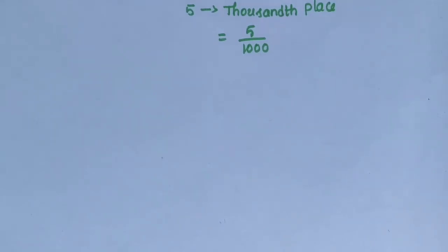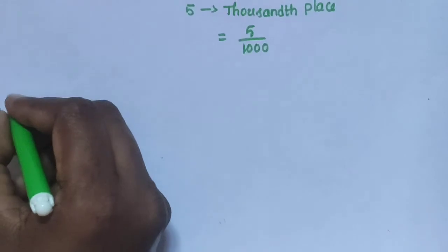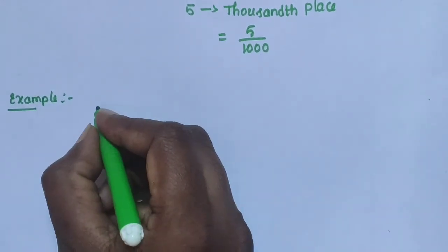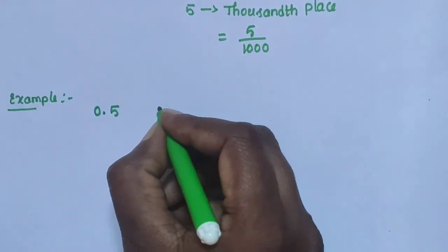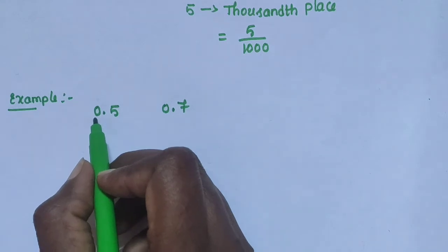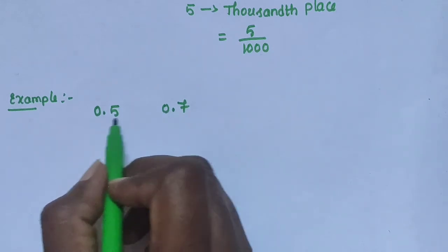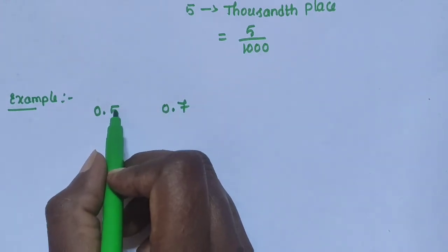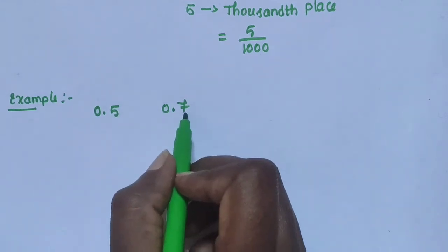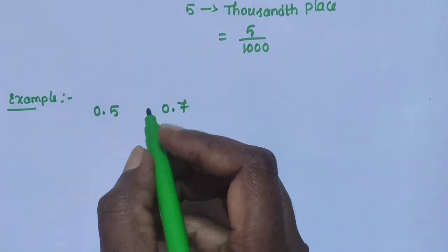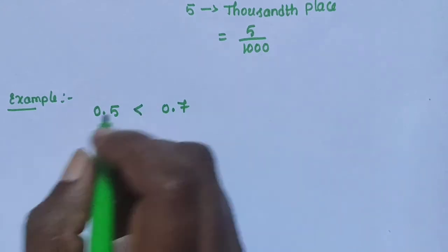Next, let's compare decimal numbers. For example, compare 0.5 and 0.7. First, compare the whole number parts — both are in the units place and are the same. Next, compare the decimal part, which is the tenths place. Here we have 5 and 7. Since 7 is greater, 0.7 is the greater decimal number.